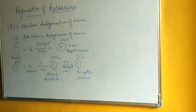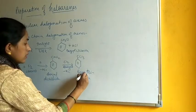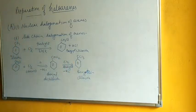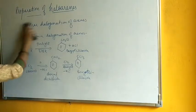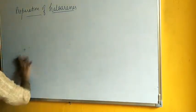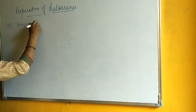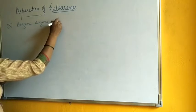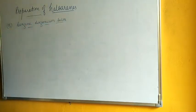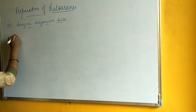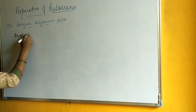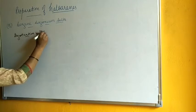This is the preparation of haloarenes directly from arenes. Now we will discuss the preparation from the benzene diazonium compound. The second main method is from benzene diazonium salts. To prepare haloarenes this way, we first need to prepare benzene diazonium chloride through the process of diazotization.